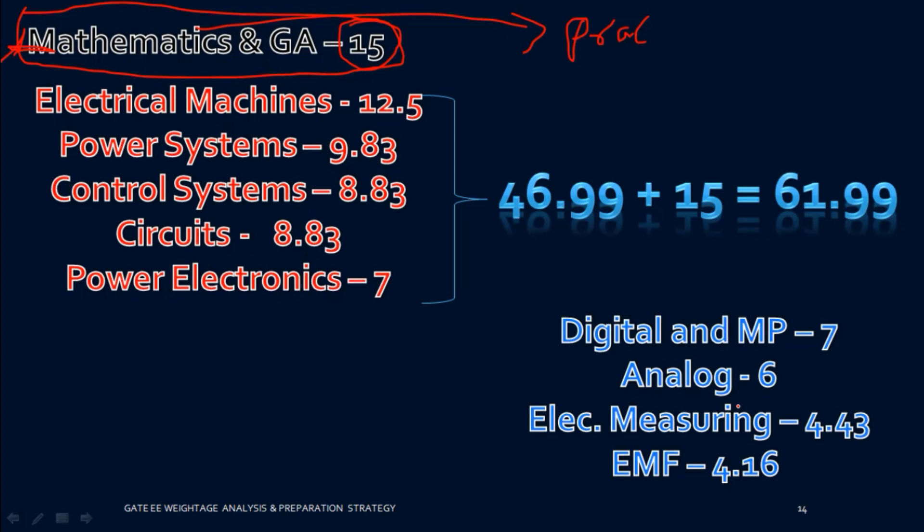I have categorized the total syllabus into two categories. High-priority subjects are marked in red — these you cannot leave at any point. Lower-priority subjects are in blue — if you have only one month, you can more or less ignore these. Electrical Machines has the highest weightage at 12.5, followed by Power Systems at 9.83, Control Systems and Circuits at 8.8, and Power Electronics at 7. Their total is 46.99 marks. Adding Mathematics and General Aptitude at 15 marks gives approximately 62 marks.